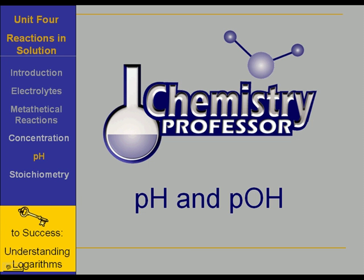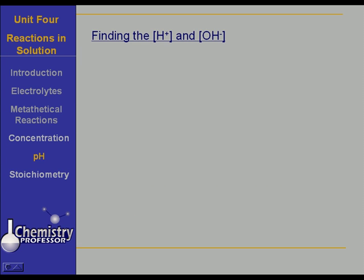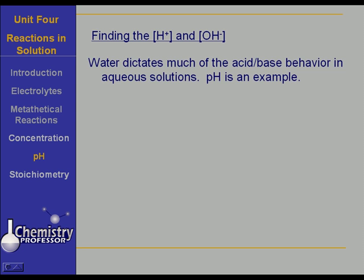The key to success in working pH and pOH problems is having some understanding of logarithms. Let's talk about finding the hydrogen ion concentration and the hydroxide ion concentration first.